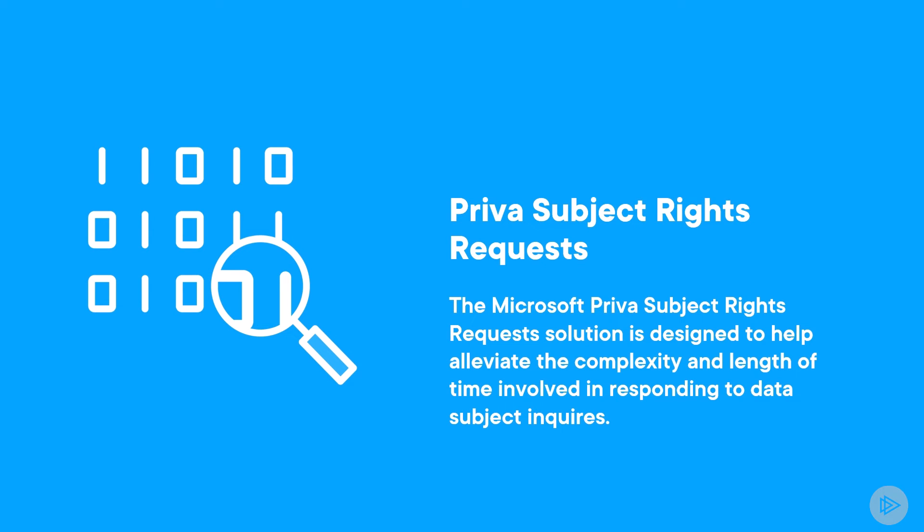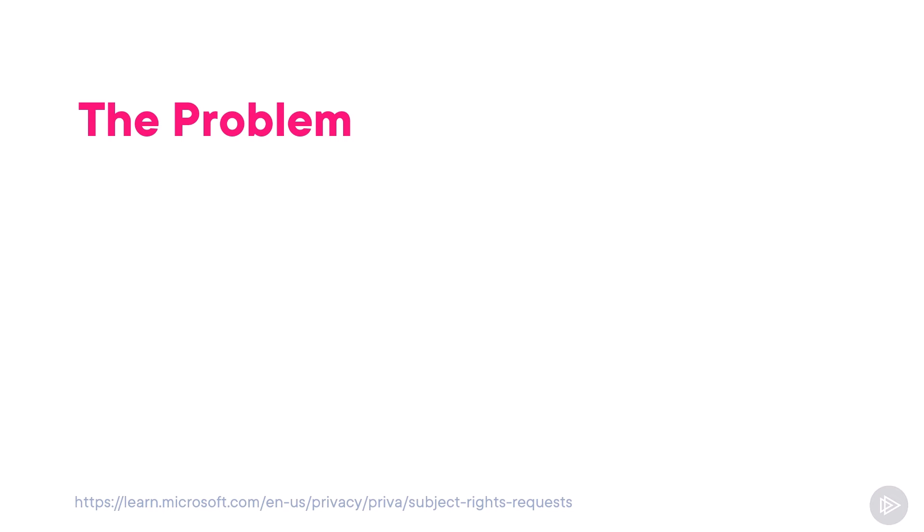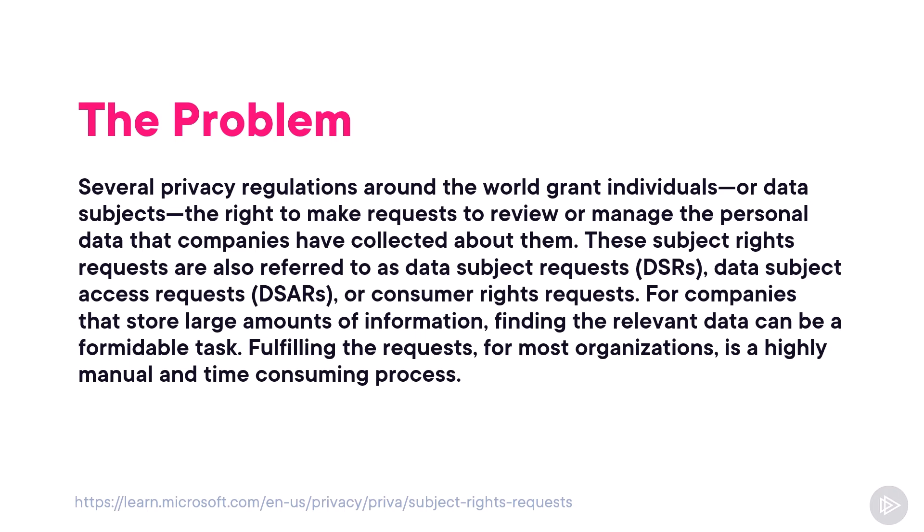Next, let's learn about Priva Subject Rights Requests. This solution is designed to help alleviate the complexity and time involved in responding to data subject inquiries. Several privacy regulations around the world grant individuals — or data subjects — the right to make requests to review or manage the personal data that companies have collected about them. These subject rights requests are also referred to as data subject requests, data subject access requests, or consumer rights requests. For companies that store large amounts of information, finding the relevant data can be a formidable task, and fulfilling the request is typically a highly manual and time-consuming process.